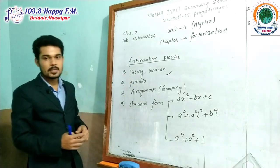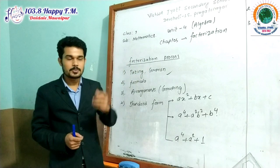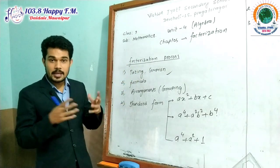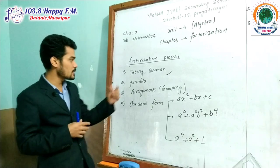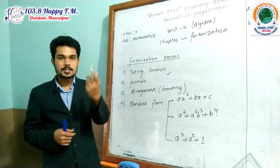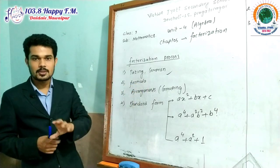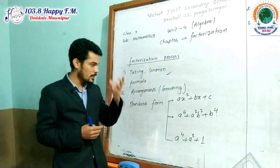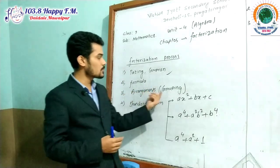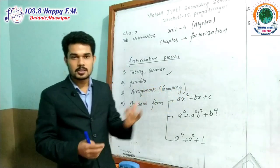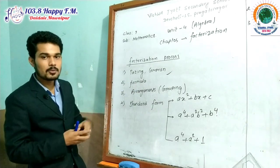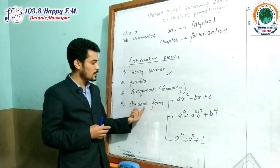Factorization process — we have already discussed this in the previous video. There are some steps we can follow while factorizing any kind of algebraic expressions. The first step is taking common, and the second is using the formula. The list of formulas I have already posted on the Facebook group — you can see and download from there. And the third step is arrangements, also known as grouping: grouping certain elements of the expression and changing them into a formula form will help in factorization.